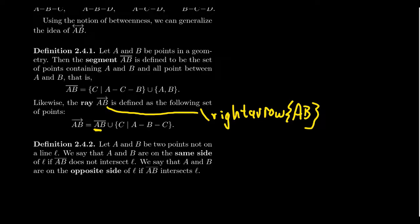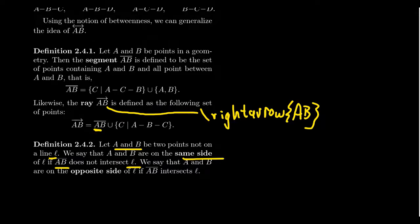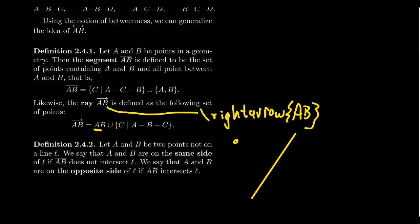One more bit of vocabulary before the betweenness axioms: we define the idea of being on the same side of a line. We say two points A and B not on a line L are on the same side if the segment AB doesn't intersect the line. Since a line can be identified with the points on it, the segment AB is also a set of points. If the intersection is empty, A and B are on the same side of the line. If the intersection is not empty, they're on opposite sides. Intuitively: if A and B are on the same side, the segment doesn't cross the line; if on different sides, it does.